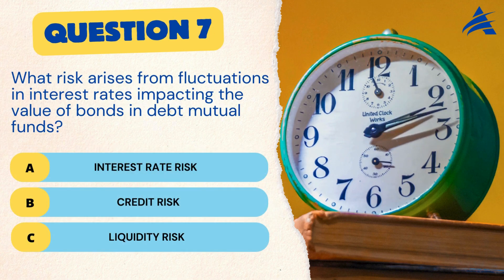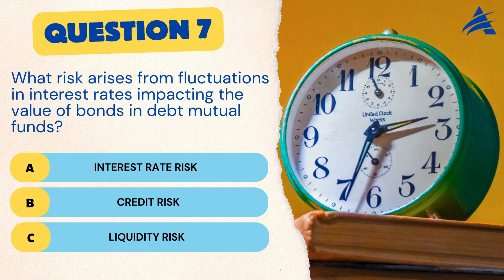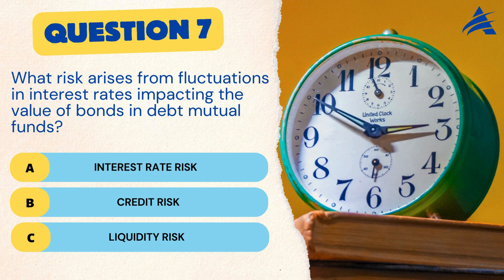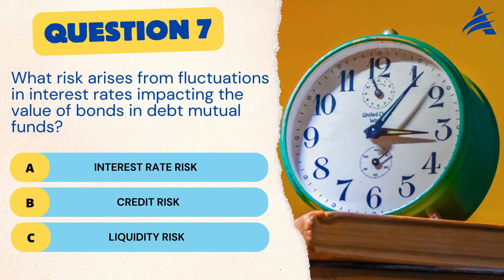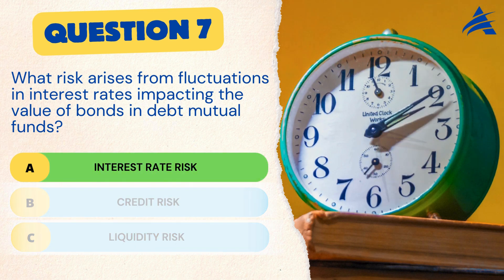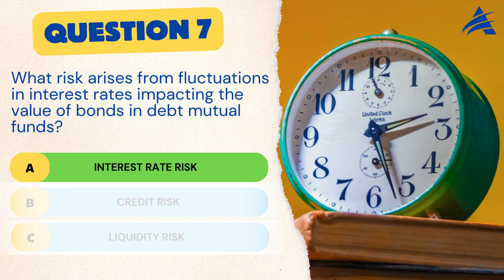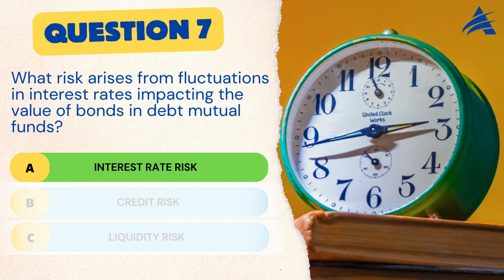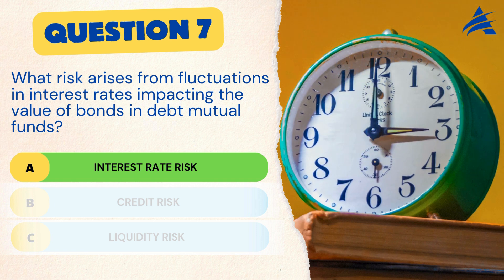Question 7. What risk arises from fluctuations in interest rates impacting the value of bonds in debt mutual funds? A. Interest rate risk. B. Credit risk. C. Liquidity risk. The correct answer is A. Interest rate risk. Interest rate risk is a significant consideration for bond investors. Understanding this risk helps in making informed decisions in response to changes in interest rates.